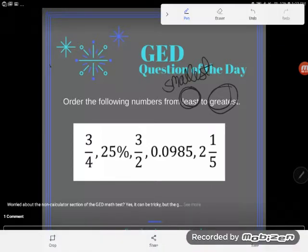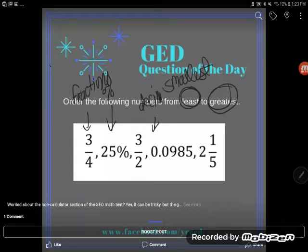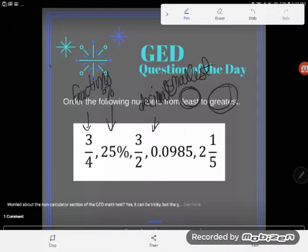And it sounds easy enough until I start looking at the numbers and realize they're in different forms. I mean take a look at this. I have some fractions, I have some percentages, I have a decimal over here. It's easy enough to compare things when they're the same kind of things. But when they're different kinds of things, well, that's a different story.